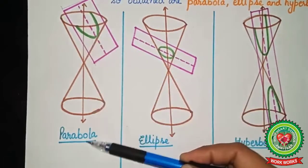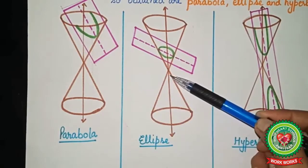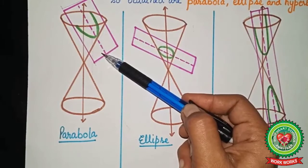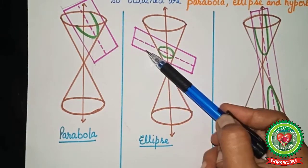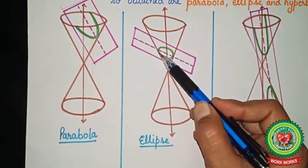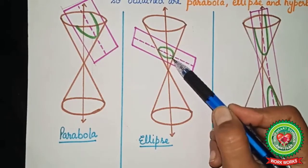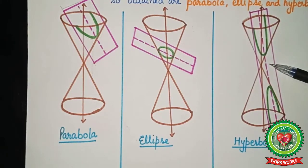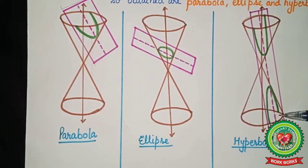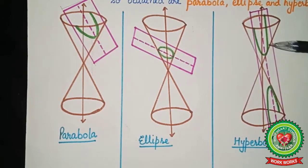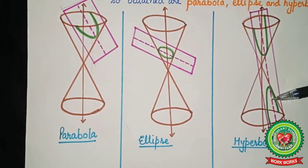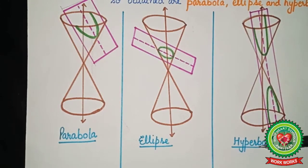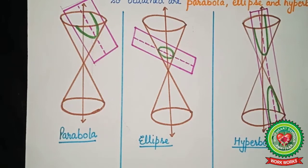In the first case we get a curve of the form parabola. In the second case, when we change the direction of the plane, we get a different type of curve — an ellipse. Next, when we do the intersection of the cone with the plane in a third direction, we get two curves which are collectively known as a hyperbola. So in this way we get three types of curves: parabola, ellipse, and hyperbola.